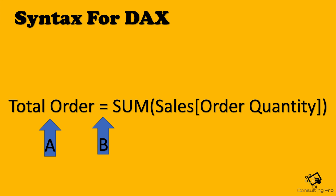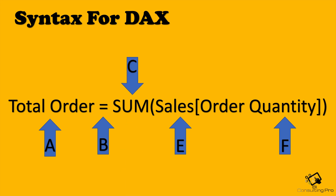The equal sign indicates the beginning of the formula. Then you see 'Sales' — this is the name of the table. 'Order Quantity' is the column I am using. Then you see SUM — it's a function that calculates the sum of the order quantities. There are two parentheses that surround an expression containing one or more arguments. All functions require at least one argument, and an argument passes a value to a function.